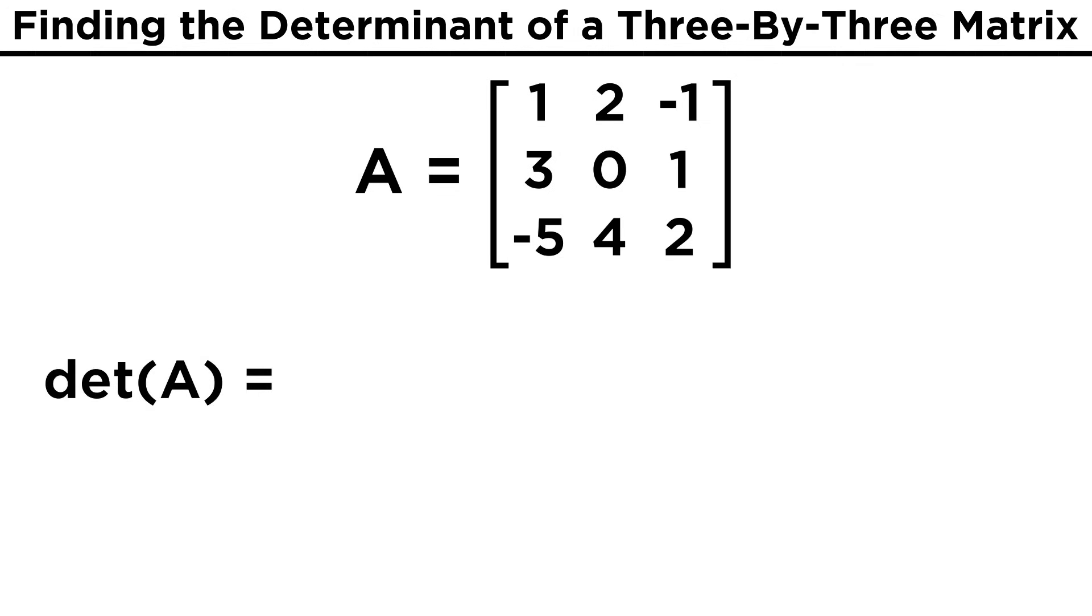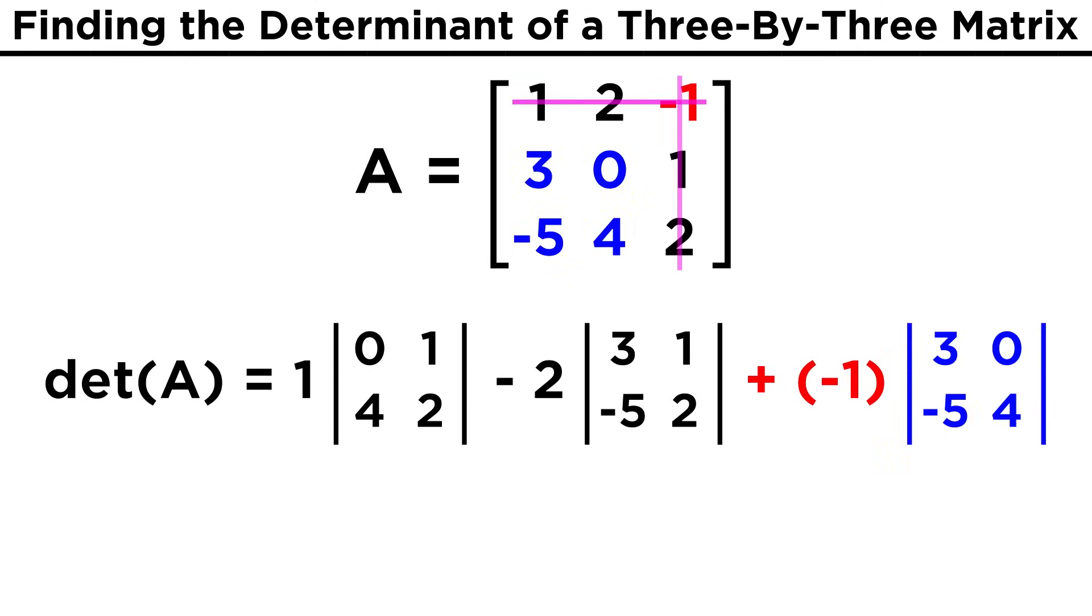If we want to find the determinant of this three by three matrix, once again, all we do is take this first entry, one, and multiply by the determinant of this two by two matrix. From that, we subtract the product of the second entry from the first row, two, and the determinant of this two by two matrix. And to that, we add the product of the third entry from the first row, negative one, and the determinant of this last two by two matrix.